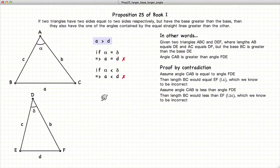Now let's assume that alpha is less than delta. If this is the case, according to Proposition 24, side BC would be less than side EF, or a would be less than d. But we've already established that a is greater than d, so this cannot be true.